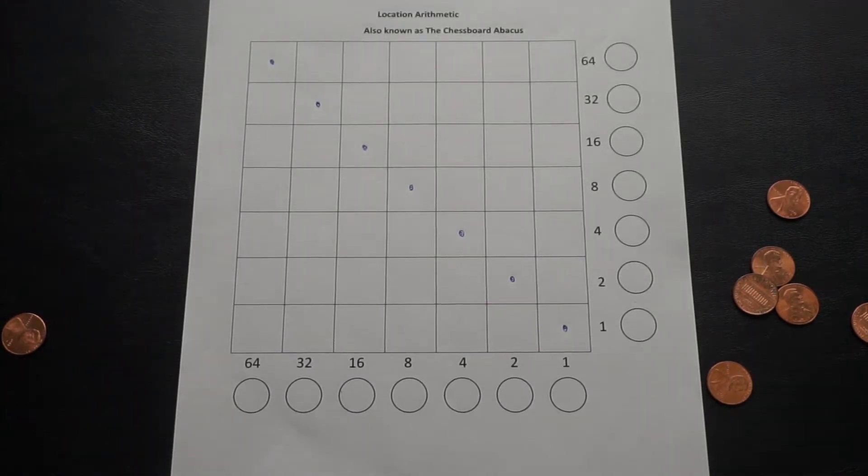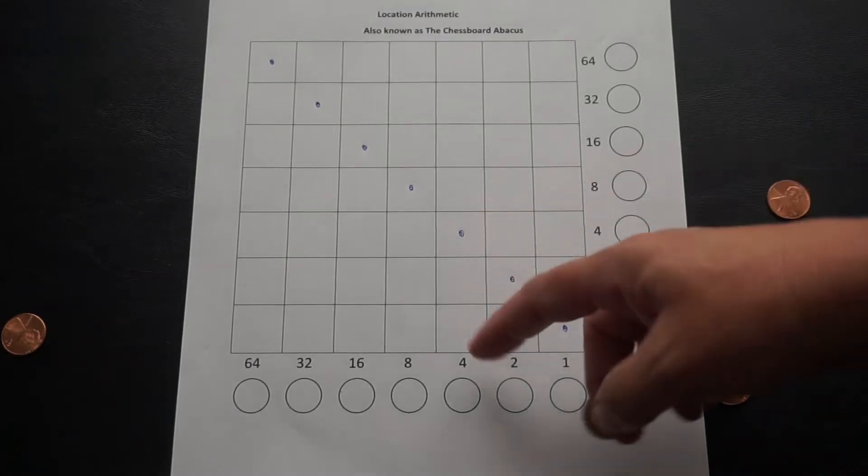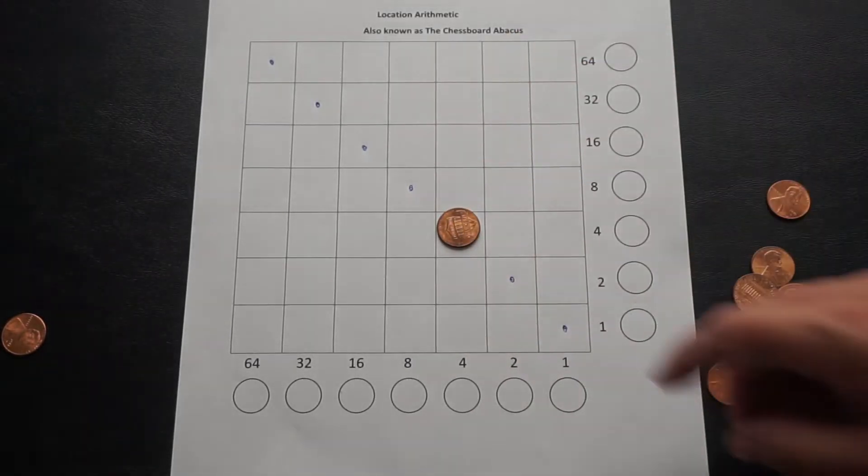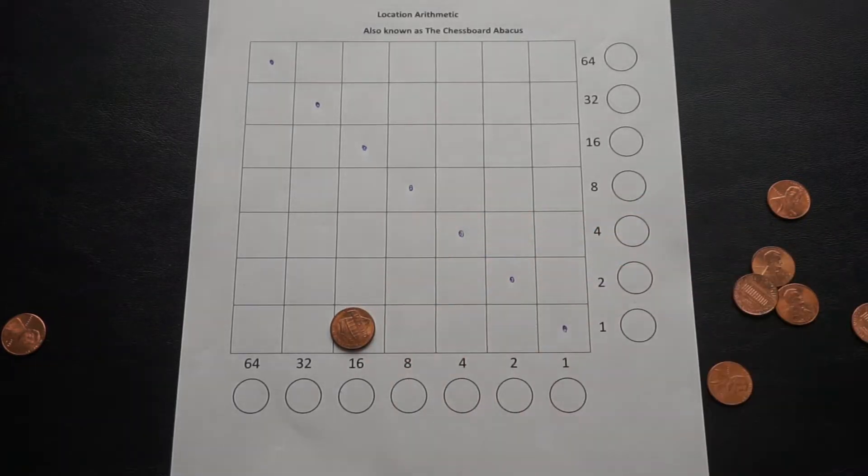Here we'll be taking square roots using Napier's chessboard abacus. So the square root of a number is what you can multiply by itself to get that number. For example, if I multiply 4 times 4, that gives me 16.